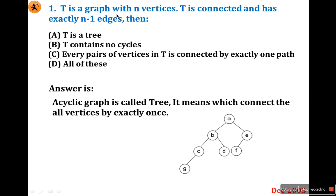If T is a graph with n vertices, T is connected and has exactly n-1 edges, then definitely it is a tree. T is a tree and T contains no cycle — an acyclic graph is called a tree, so that is also true. Every pair of vertices in T is connected by exactly one path — that is also true. So the answer is all of these.